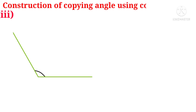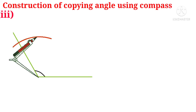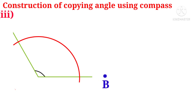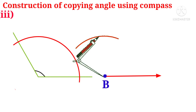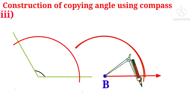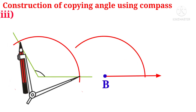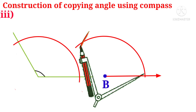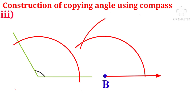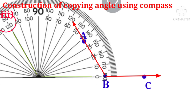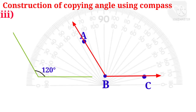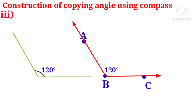Third problem figure: construction of copying angle. Take the compass, put the sharp end at the corner with some radius, and draw an arc. Take a point B and draw a ray through it. With center B and the same radius, draw an arc. Take the length of the arc as radius and draw an arc cutting the previous arc. The intersection points are identified and named A and C, then join B and A with a ray — angle ABC is formed. The problem figure shows 120 degrees and the copied angle also shows 120 degrees — correct copied angle is constructed.